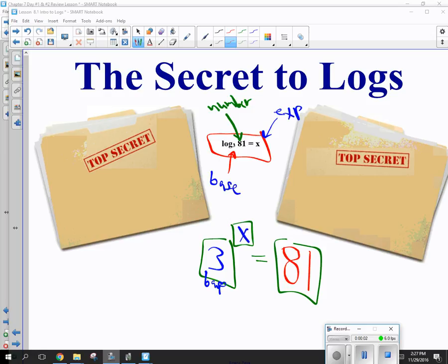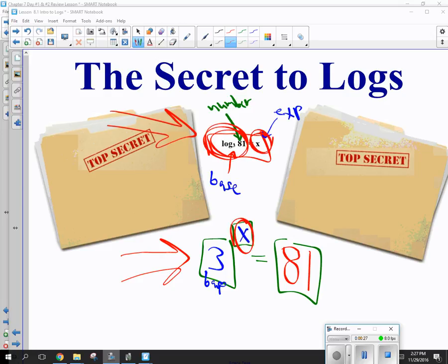Real quickly, the secret to logs is changing from the log form, which is kind of the log form right here, base 3, exponent x, number 81, change it into exponent form. This is your exponent form: base 3 to the exponent x equals 81. Logs are exponents, so that's what the focus is in this chapter.